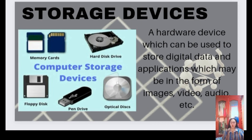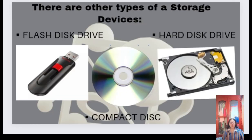Next is storage devices. Computers have various forms of storage to store data permanently. Hard disk drives (HDD) and solid state drives (SSD) are the most common storage devices, providing long-term storage for operating systems, applications, files, and other data. Other types of storage devices include: flash disk drives — a plug-and-play portable storage device that uses flash memory and is lightweight enough to attach to a keychain; the hard drive — the hardware component that stores all of your digital content; and the compact disc — a portable storage medium that can record, store, and play back audio, video, and other data in digital form.